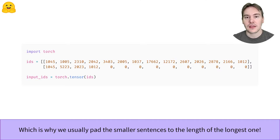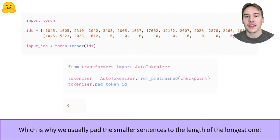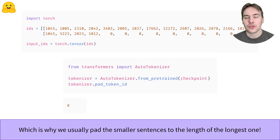In general, we only truncate sentences when they are longer than the maximum length the model can handle. The value used to pad the second sentence should not be picked randomly. The model has been pre-trained with a certain padding ID, which you can find in tokenizer.padTokenID.